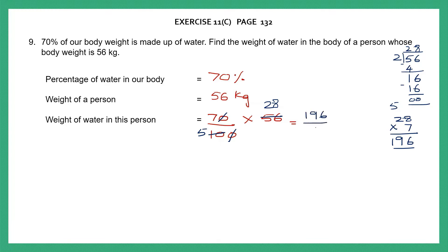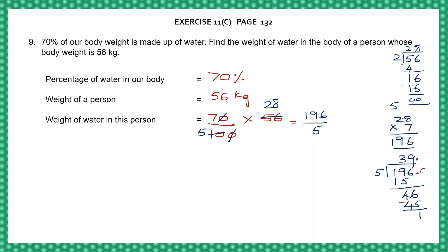And in the denominator, we have 5. Now let's divide 196 by 5. 5 3s are 15, and then I've got 46. 5 9s are 45, minus I have 1. Now if I have to carry on with my division, I need to put a decimal point here and carry it up, then put a 0 which I can bring down. My number is 10. 5 2s are 10. So we've got our answer here.